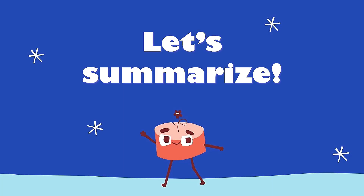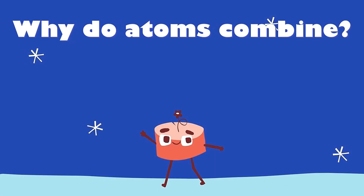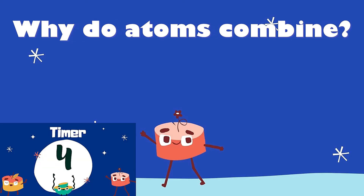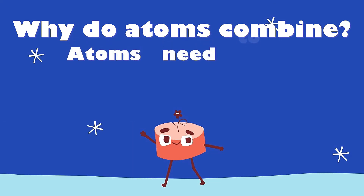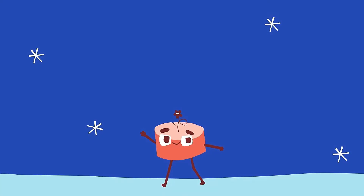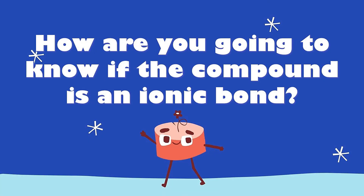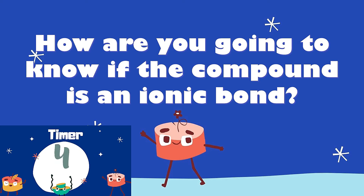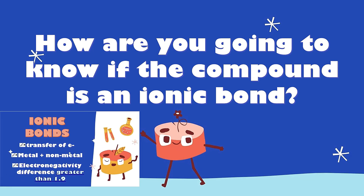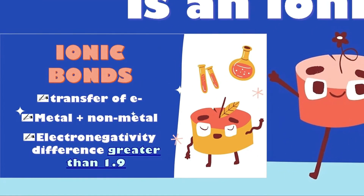Let's summarize by answering these questions. Why do atoms combine? Very good — they need to combine to become stable. How do you know if a compound is an ionic bond? We need to remember: it is a complete transfer of electrons; it is a combination of metal and non-metal; and its electronegativity difference is greater than 1.9.